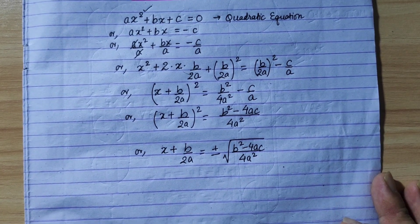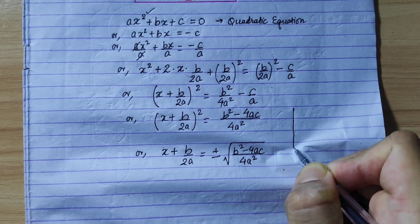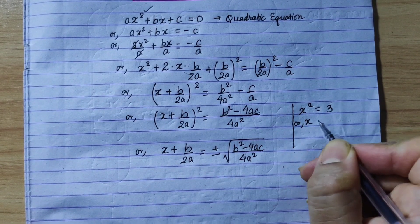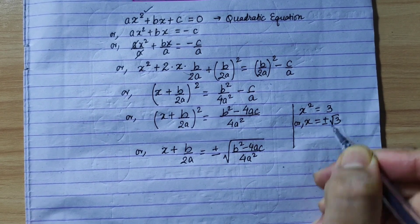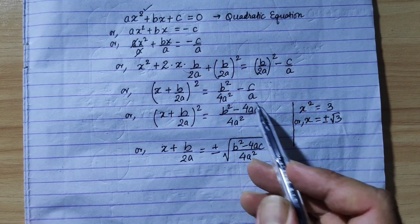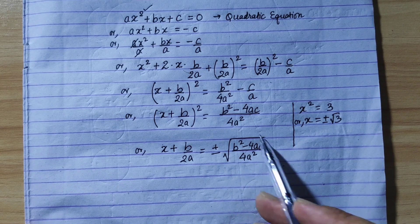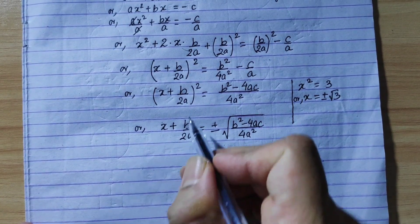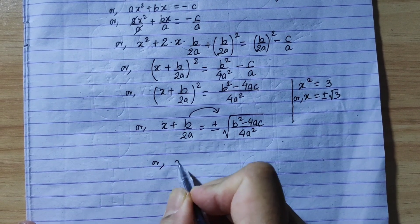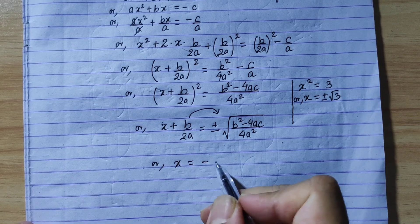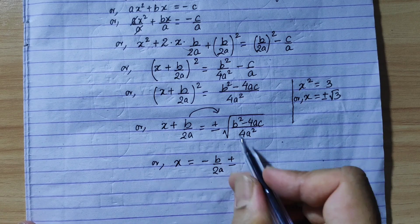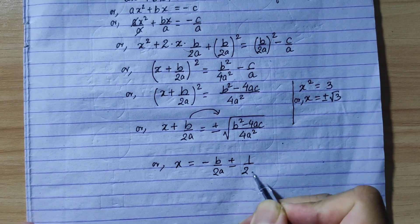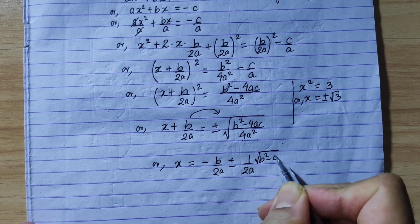Now at this point, we have x plus b by 2a, to the whole square. Taking the square root of both sides, we get x plus b by 2a equals plus or minus the square root of b² minus 4ac upon 4a². The square root of 4a² is 2a, so we have 1 upon 2a times the square root of b² minus 4ac.